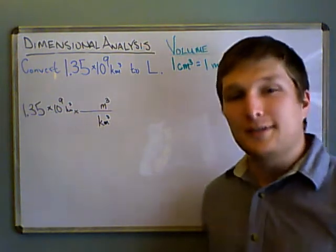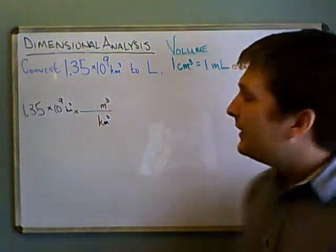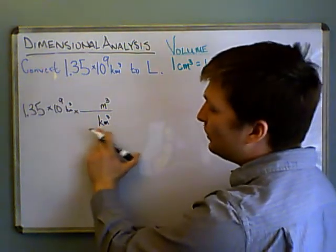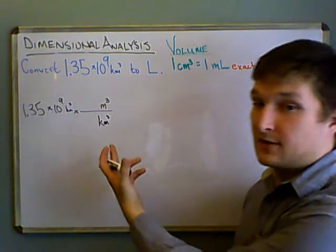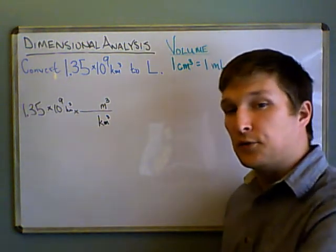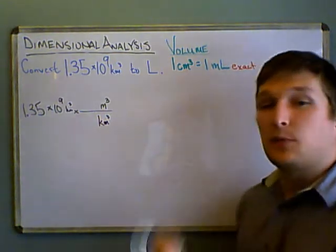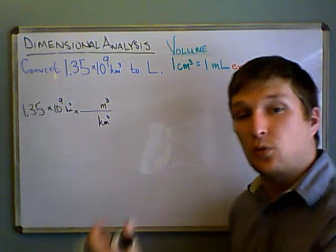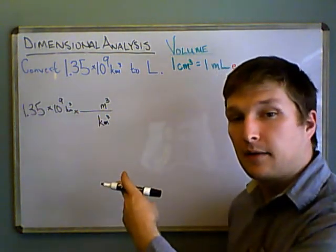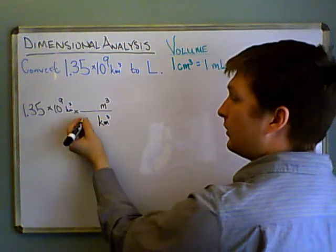And now, this is where it gets really tricky, and this is something you have to keep in mind. Whenever your unit is raised to a power, like in this case it's 3, it's a unit cubed, then our ratio has to be raised to the same power. So if it were meters squared, we'd have to square whatever we're going to put in there. Since it's cubed, we're going to cube it.